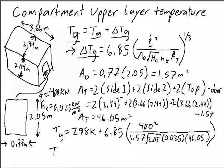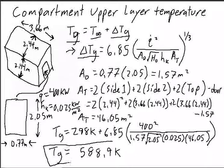And so that gives us an upper layer gas temperature equal to 588.9 Kelvin. Now it's important to take a look at these answers and see if you think they're reasonable.